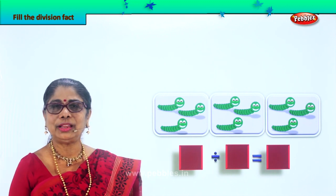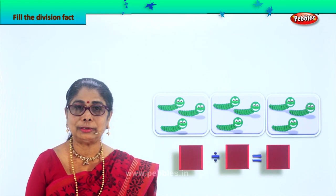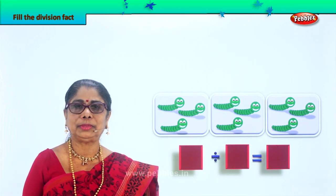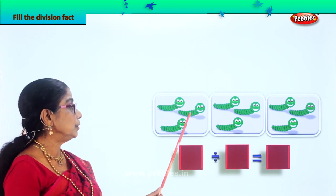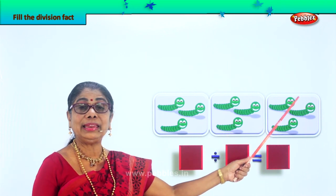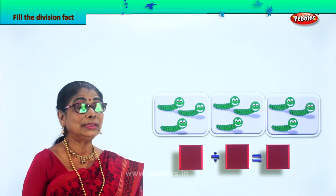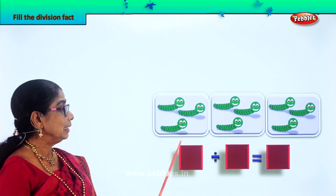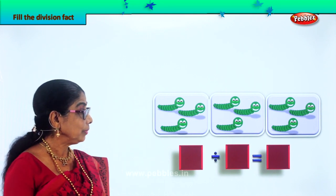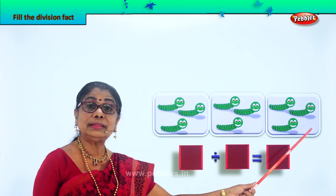Look what's given to you — lovely smiley worms. What's the total number of worms over here? That we must know. 1, 2, 3, 4, 5, 6, 7, 8, 9. How many? Total of 9 smiley worms. So we can write the total number of worms here: 9. Then how many groups are there? 1, 2, 3 groups.